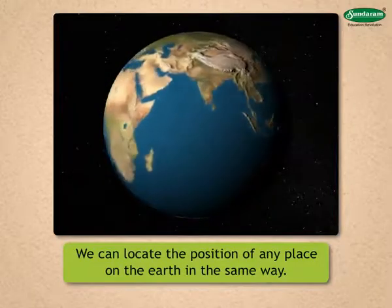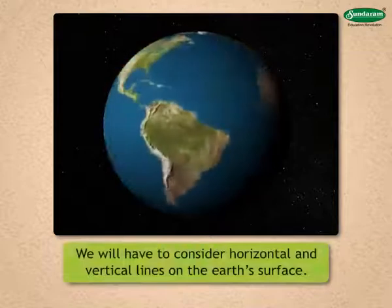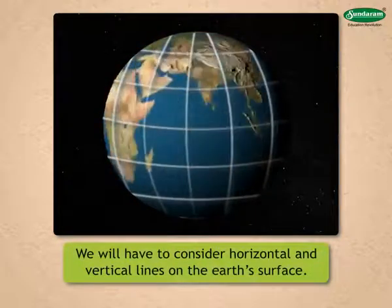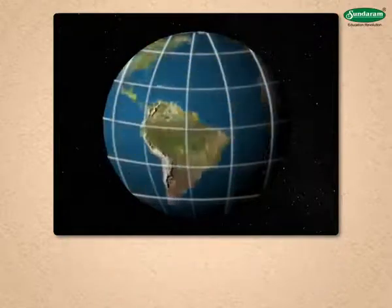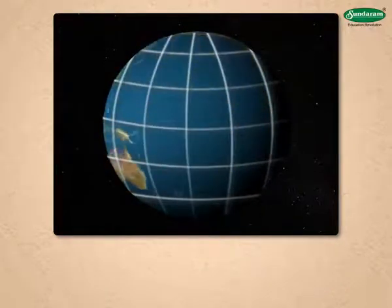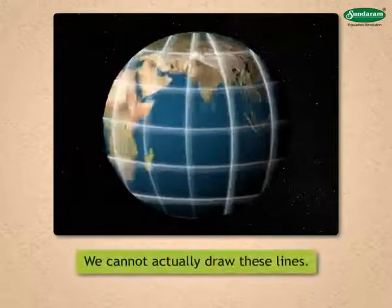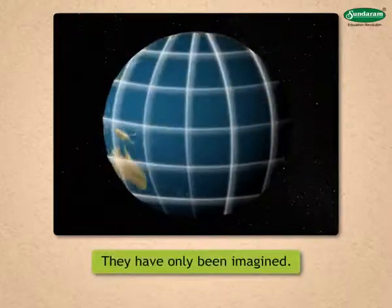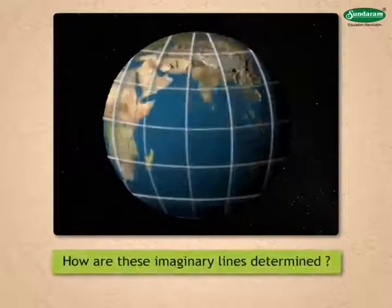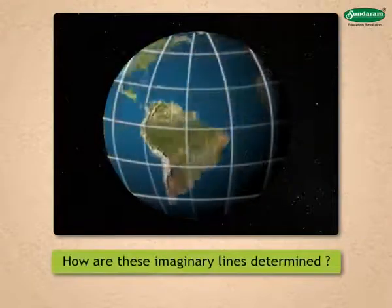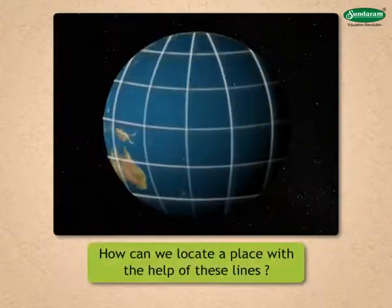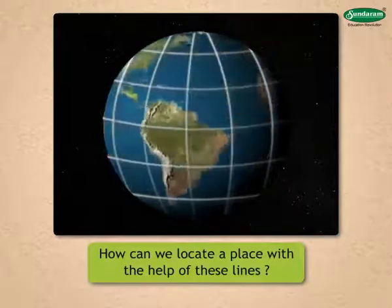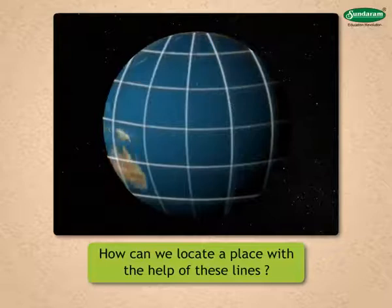In order to do that, we will have to consider horizontal and vertical lines on the earth's surface. Because of the vastness of the earth's surface, we cannot actually draw these lines — they have only been imagined. How are these imaginary lines determined? How can we locate a place with the help of these lines? We will learn about it in this chapter.